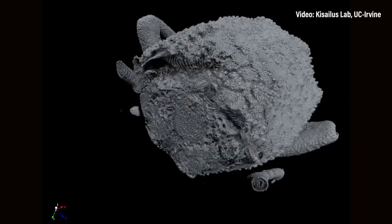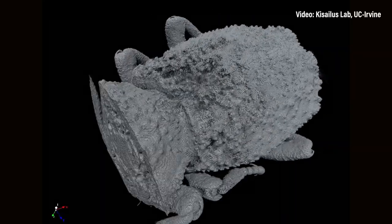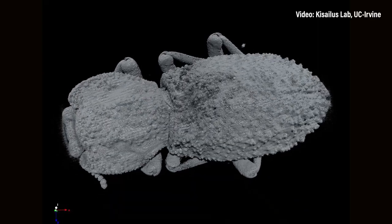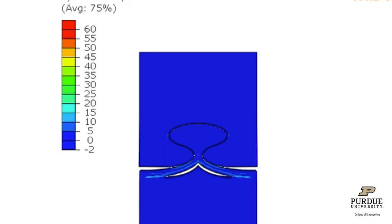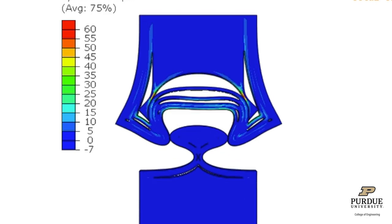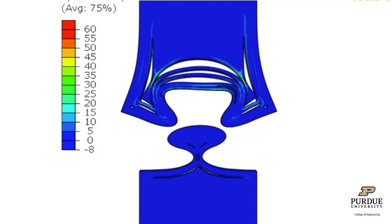Now that we've made the observation and confirmed that the beetle has the optimum geometry, we go back to the models and try to understand the why. Because if we understand how, we can extrapolate to other materials. So right now we have polymers — can we take this information and apply it to metals or ceramics?